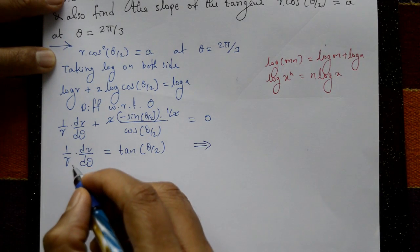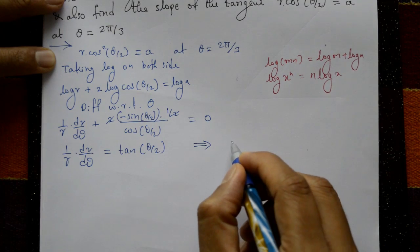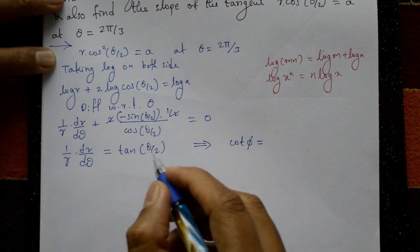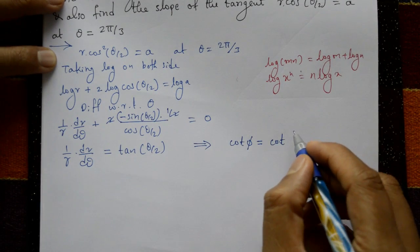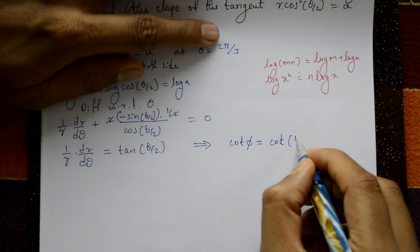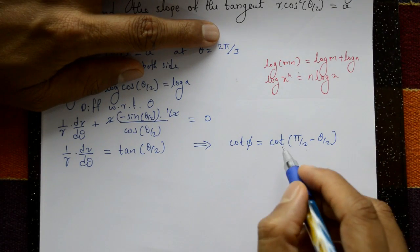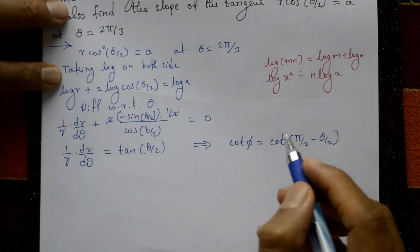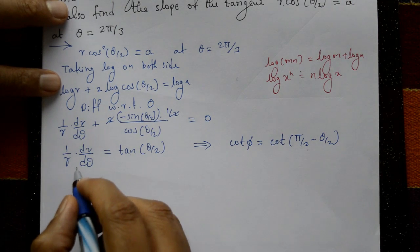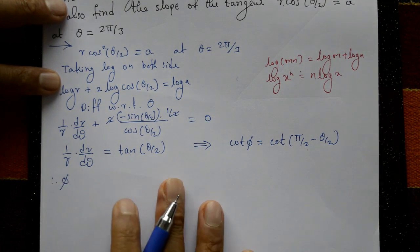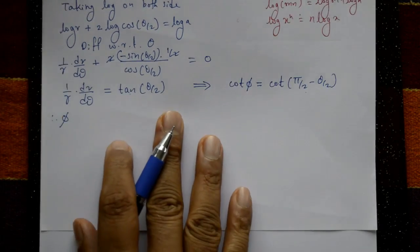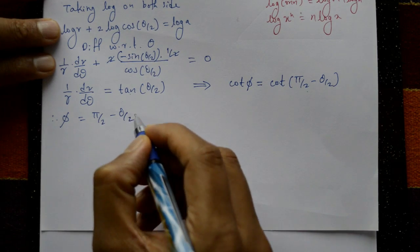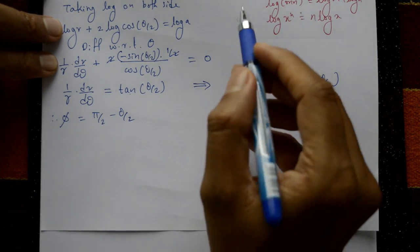This gives −cot φ = −tan(θ/2). Now tan(θ/2) = cot(π/2 − θ/2). So cot cancels on both sides, and we get φ = π/2 − θ/2. Required: slope of the tangent.